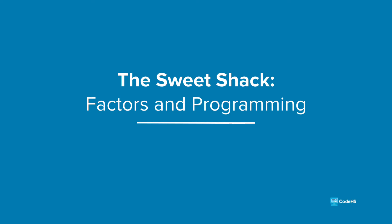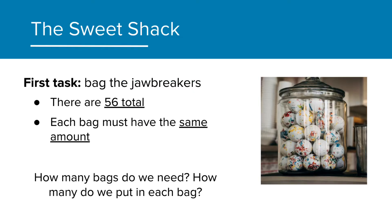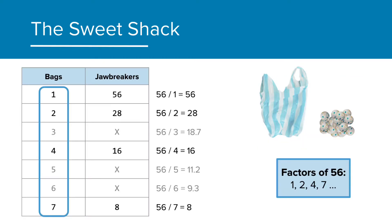Hi! In the last video, we talked about a number of factors and how they can help us figure out the different ways we can bag candies. As a reminder, our first task was to come up with the different options to bag our jawbreakers. There are 56 total, and each bag must get the same amount. We determined that the factors of 56, the total jawbreakers, were going to be the bag counts that would evenly divide the jawbreakers. So bag counts of 1, 2, 4, 7, etc. are all viable options for us.